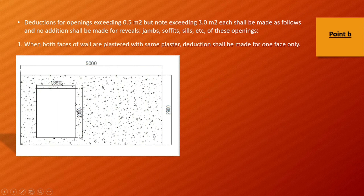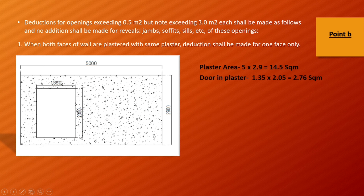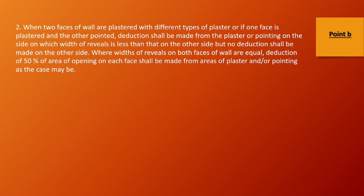This wall is one side and that side is also a wall. The same material is plastered on both sides. The opening is about 1.35 by 2.5 meters. One side wall is 14.5 meters and the opening size is 2.75 square meters. You have to take a plaster of the wall and minus one side. If there is one-side plaster and one-side opening with a ceiling reveal, you don't need to minus the walls — it will take the plaster of the condition from the bottom line.